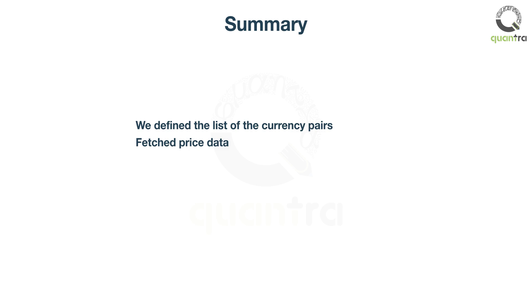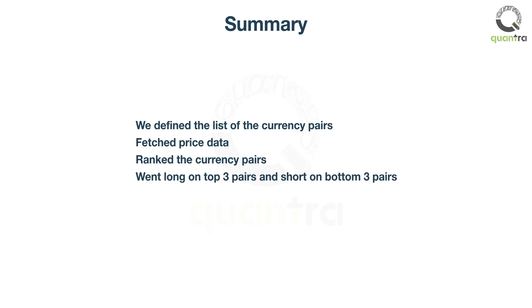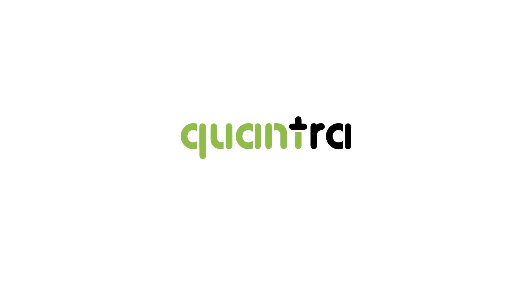To summarize the steps in coding: we defined the list of currency pairs, fetched price data, ranked the currency pairs, went long on the top three pairs and short on the bottom three pairs, and scheduled the strategy function to run every week.